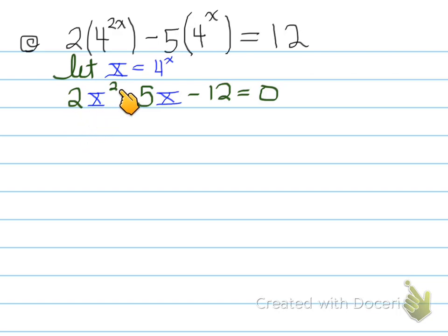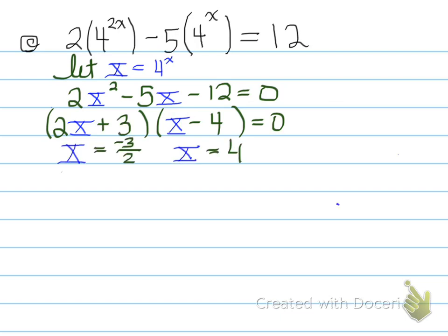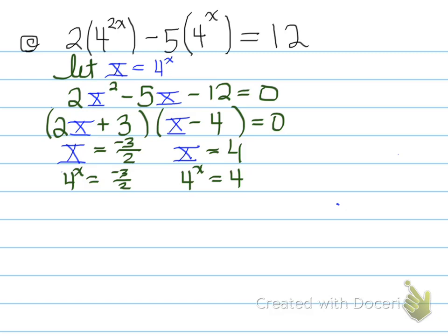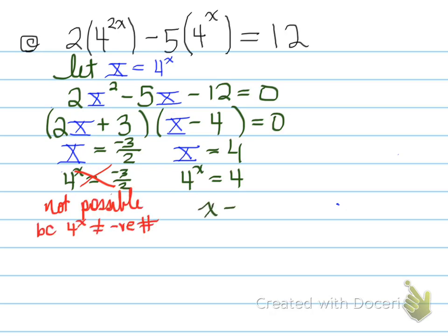We factor u² minus 5u minus 12 equals 0, and solve for u. But remember, u was just a substitution — we need to bring back what u represents, which is 4^x. Looking at the first solution, it's not possible because 4^x can never equal a negative number. Looking at the other solution: 4^x equals 4, so x equals 1. That's the only solution to Part C.